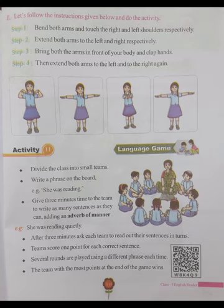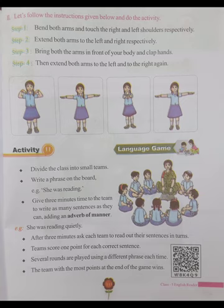Let's follow the instructions given below and do the activity. Step 1: Bend both arms and touch the right and left shoulders respectively. Step 2: Extend both arms to the left and right respectively. Step 3: Bring both arms in front of your body and clap hands. Step 4: Then extend both arms to the left and to the right again.